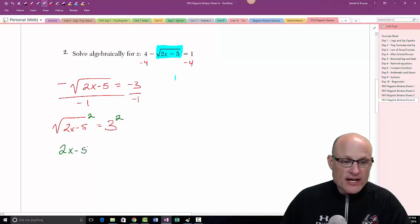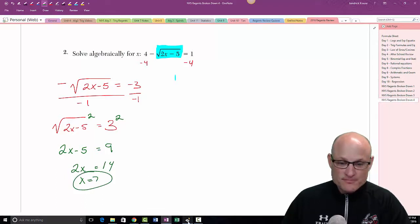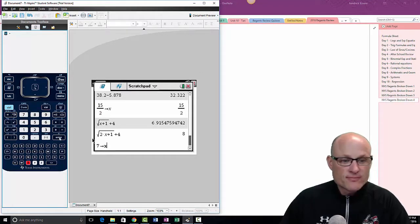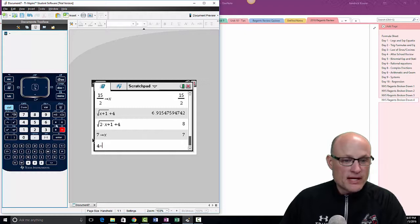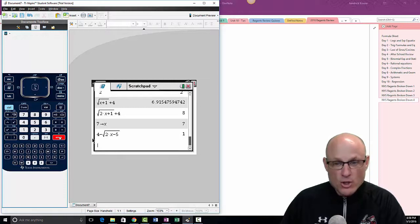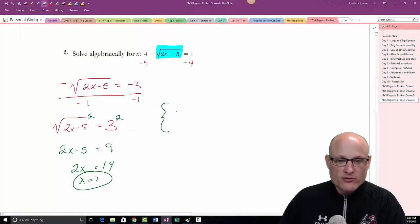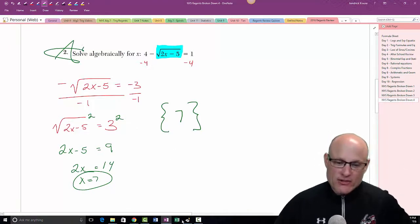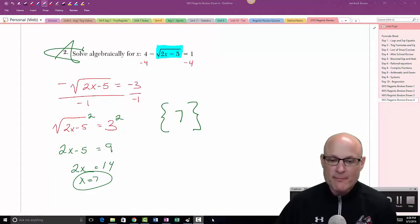2x minus 5 equals 9. 2x equals 14. x equals 7. Now we're going to store 7 into x and type it in: 4 minus the square root of 2x minus 5. We're hoping this turns out to be 1. Boom, 1 checks. Give your answer like a professional: 7. We've checked it, we started off, never have to look at it again.